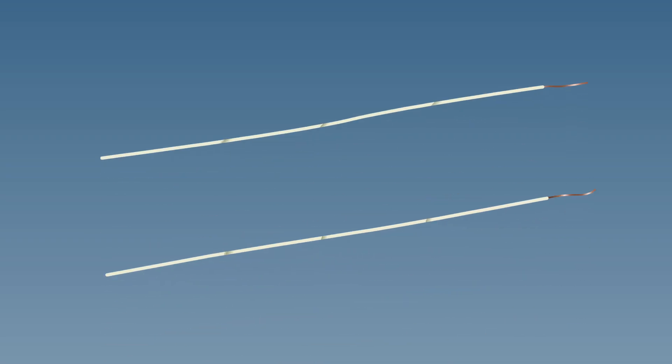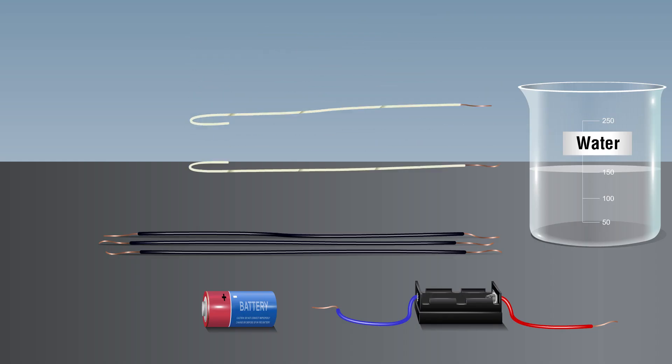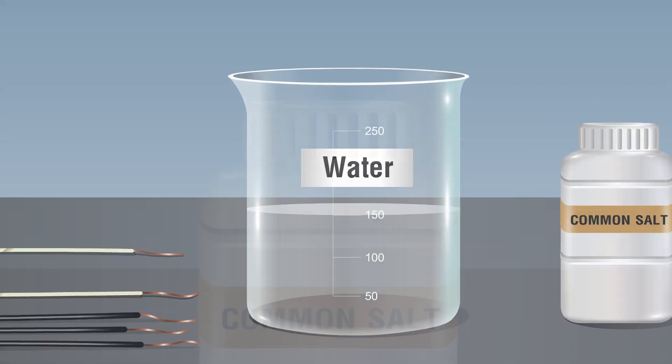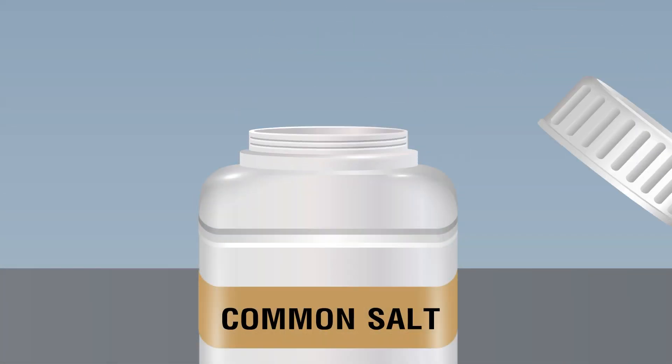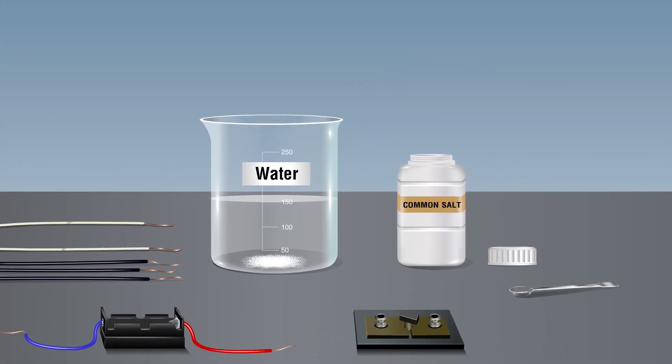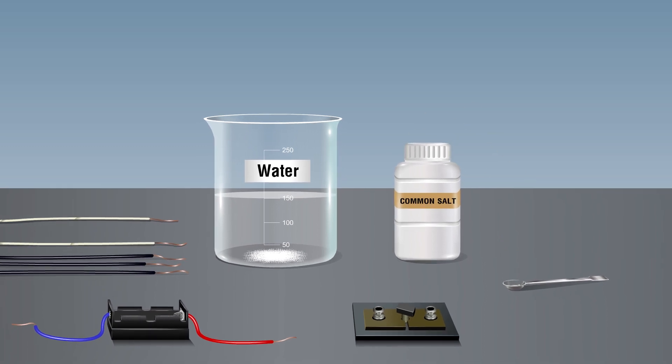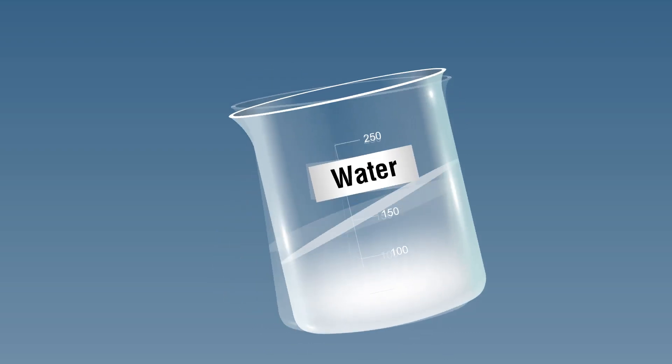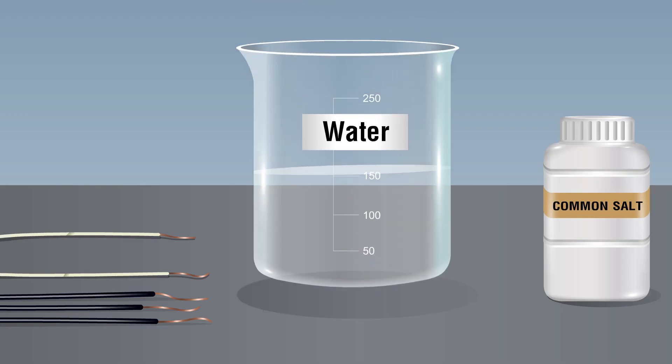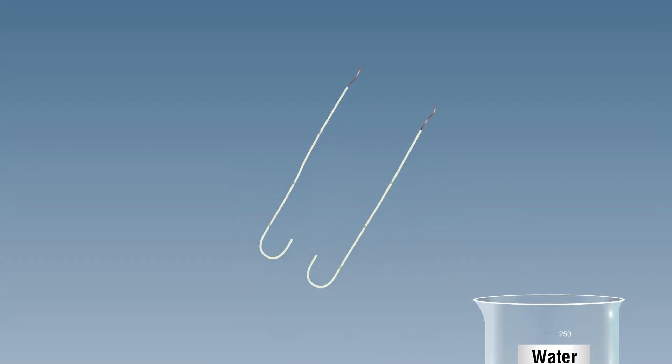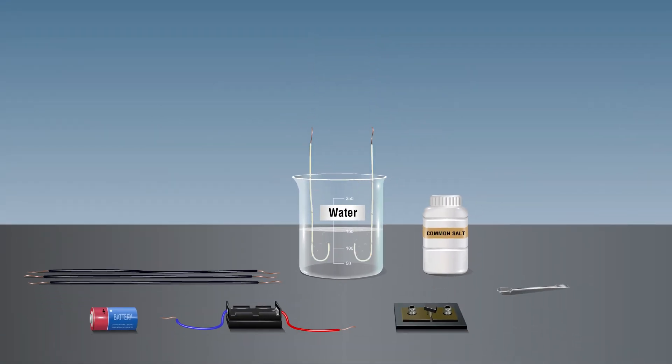Fold one end of each wire into a U-shape. Fill the beaker about half with water. Add half a teaspoonful of common salt to the water to make it more conducting. Insert the U-shaped connecting wires in water.